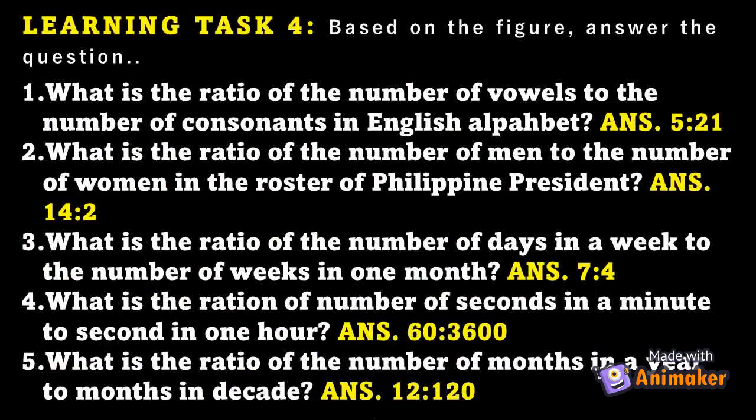Learning Task 4 — Answer the given questions. (1) What is the ratio of vowels to consonants in the English alphabet? Answer: 5:21. (2) What is the ratio of male to female Philippine presidents? Answer: 14:2. (3) What is the ratio of days in a week to weeks in one month? Answer: 7:4. (4) What is the ratio of seconds in a minute to seconds in one hour? Answer: 60:3,600. (5) What is the ratio of months in a year to months in a decade? Answer: 12:120.